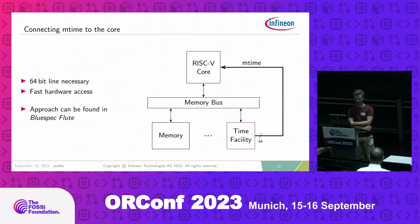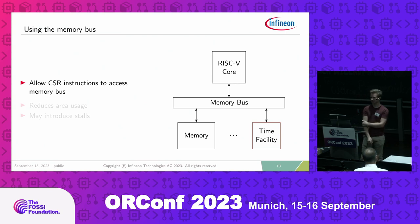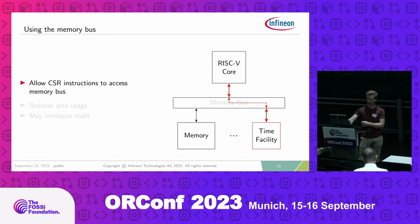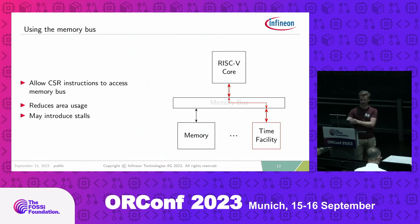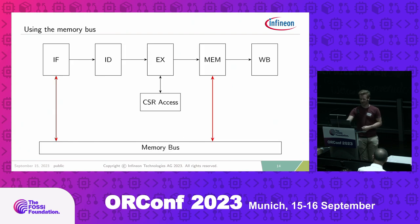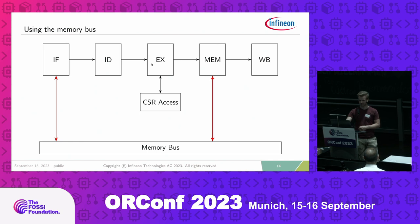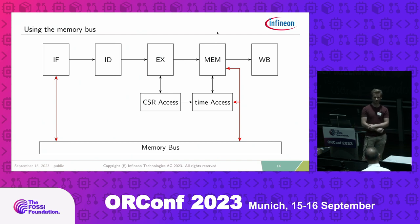This dedicated signal line approach can be found in BlueSpec RISC-V Flute, an open-source core. A different approach is allowing the CSR instruction to access the memory bus, which reduces area usage compared to direct signal routing. It may introduce stalls because the memory bus could be busy. In a five-stage pipeline, the CSR access happens at the execution stage and could be delayed one cycle to handle it in the memory stage using the memory bus.